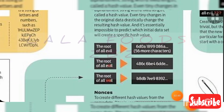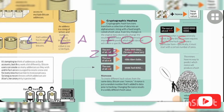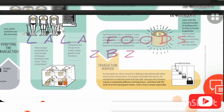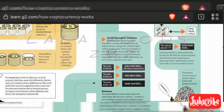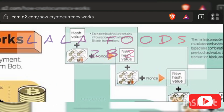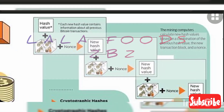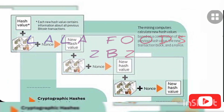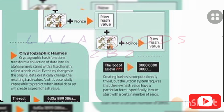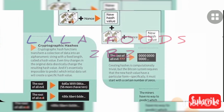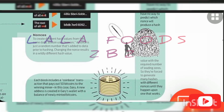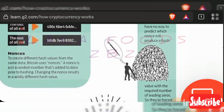Using the private key associated with their Bitcoin, a user can sign a transaction and thereby transfer the value to a new owner. The transaction is then broadcast to the network to be included in the blockchain.